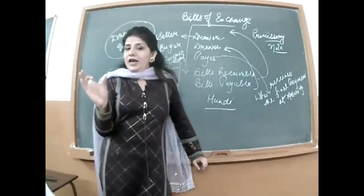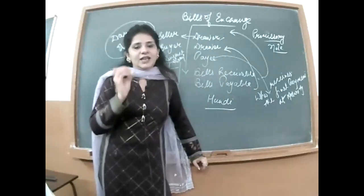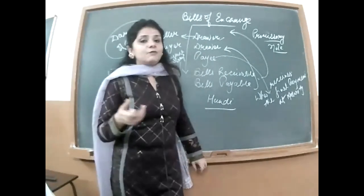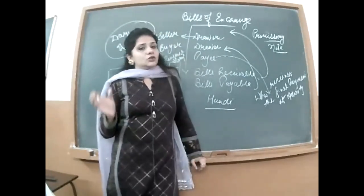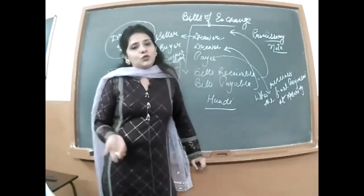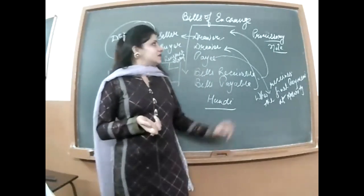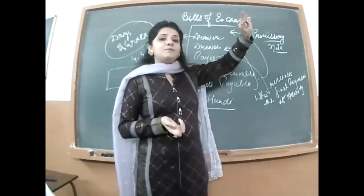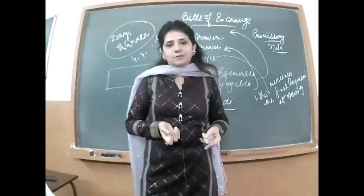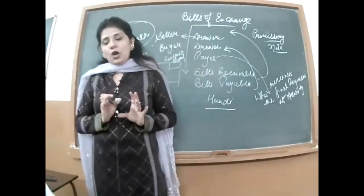A bearer cheque can be encashed at the counter; a crossed cheque has to be deposited into the supplier's bank account, after which it gets cleared. As per the Negotiable Instruments Act, we have three types: bills of exchange, promissory notes, and cheques — all three documents are included under the category we call negotiable instruments.